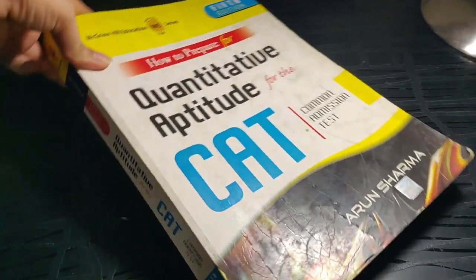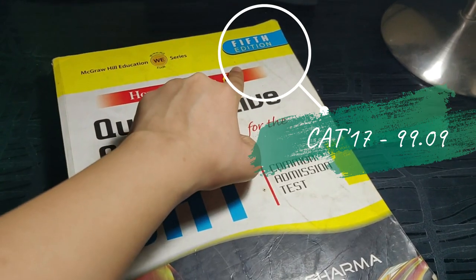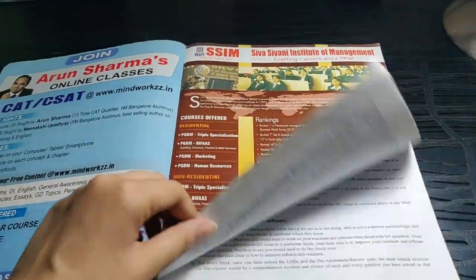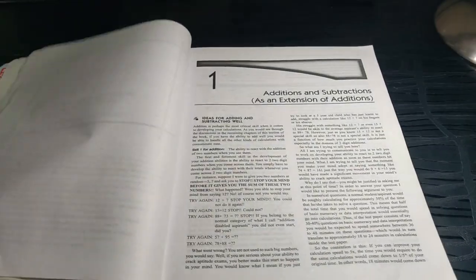Hello everyone and welcome to non-engineers. Today we are going to talk about this quantitative aptitude book for CAT by Arun Sharma. This is a book which is used by a lot of aspirants, but there is very little information out there about how this book is to be used.